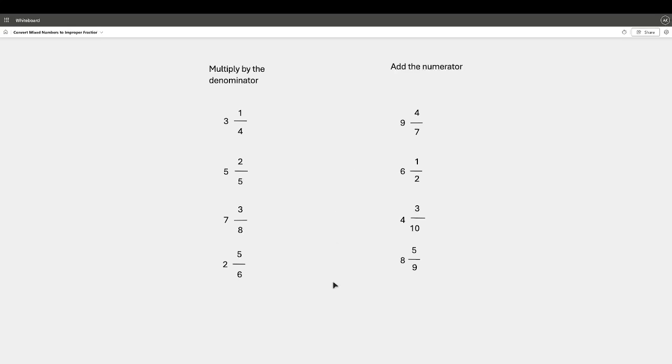For our first question, we're going to go 3 times 4. Three times four, what is that going to give us? That's going to give us a 12, right? And then we add the 12 to the 1. We do 12 plus 1.